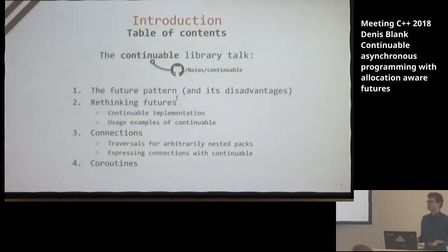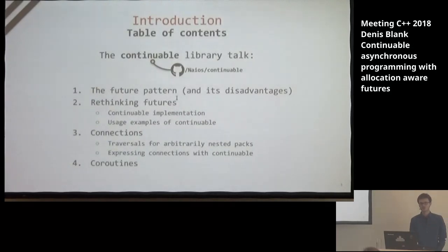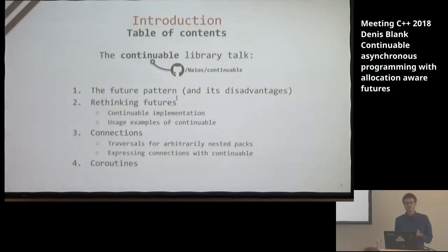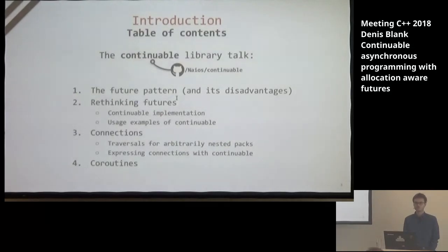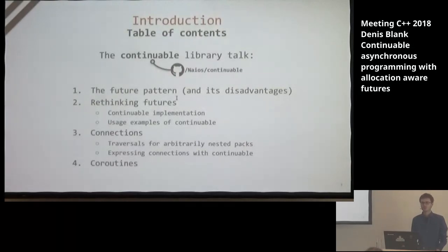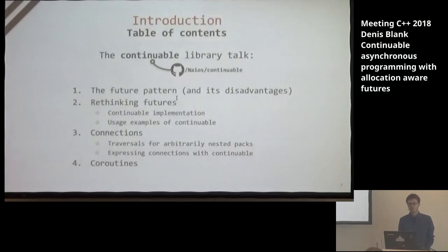This talk will be about my Continuable library, which you can find on GitHub. First, I will talk about the future pattern and its disadvantages. Then we'll think about how we could possibly improve futures. I'll introduce my Continuable implementation with usage examples, then cover connections — how we connect Continuables to each other. Finally, the last topic will be about interoperability of the Continuable library and coroutines.